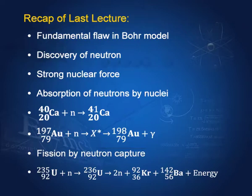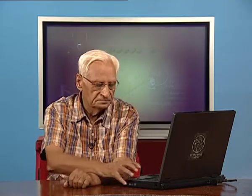We found that neutrons can trigger a fission reaction in uranium-235. In this lecture today, we shall talk first of atomic number and mass number.